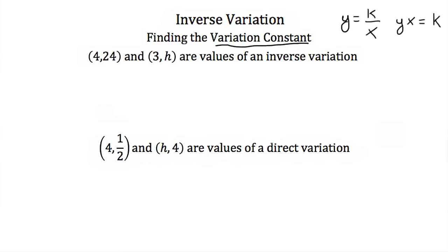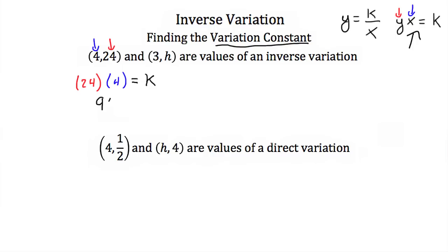To find k, we just take our first point (4, 24) and plug in 4 for x and 24 for y into our standard equation. If we do this, we'll have 24 times 4 equals k, all from using the equation y times x equals k.